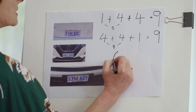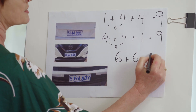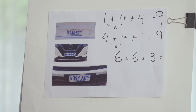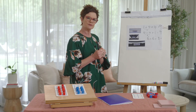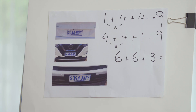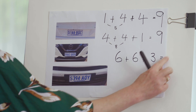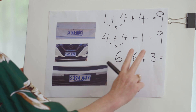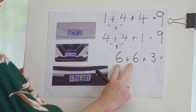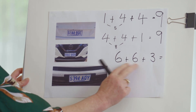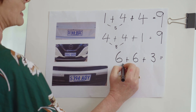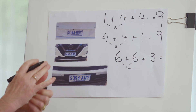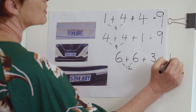Now let's have a look at the next one: six plus six plus three. Have a think — where would you go first, which numbers do you want to start with? I love my doubles, so I'm going to quickly get six plus six, which is twelve, and twelve plus three — counting on: twelve, thirteen, fourteen, fifteen. I get an answer of fifteen.